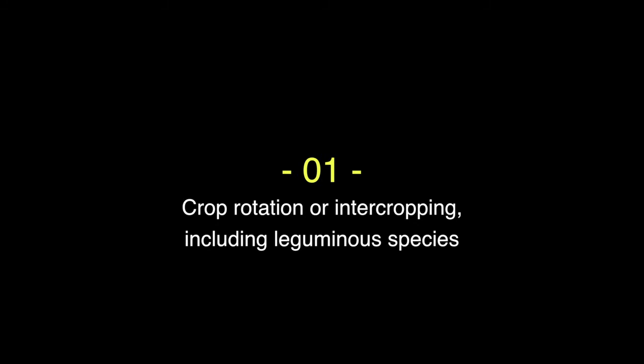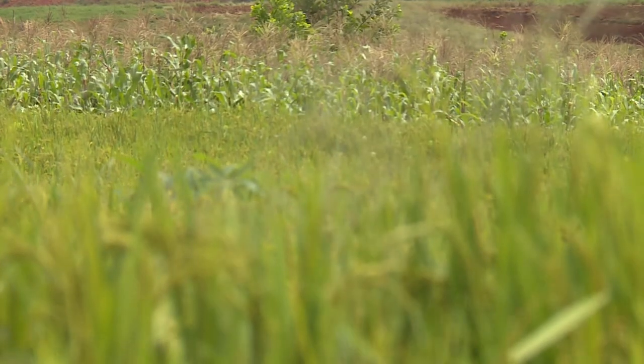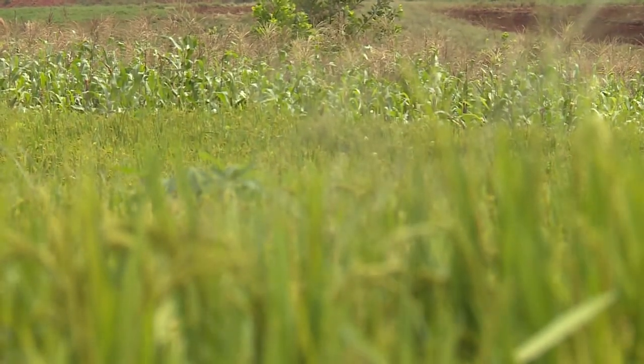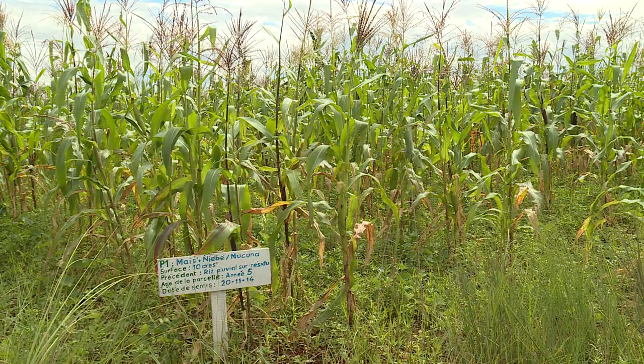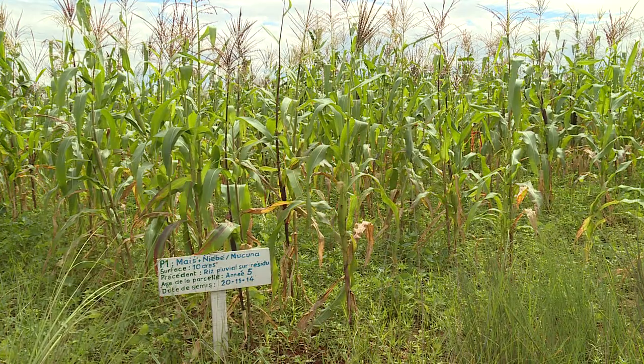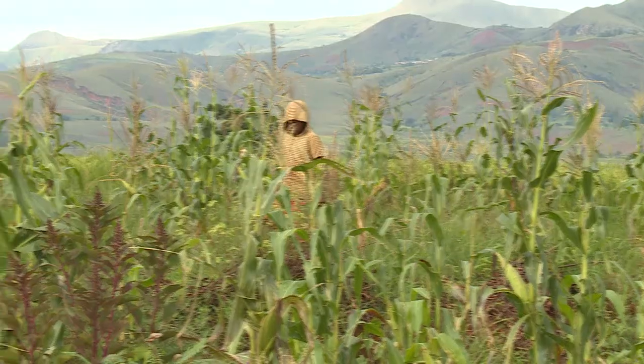The first principle is crop rotation or intercropping including leguminous species. Rotation of rice with another crop is a good practice when confronted with Striga. Let's listen to Ernest's reasoning: 'Before growing rice on this land, I grew maize intercropped with cowpea and mukuna. So I practiced crop rotation.'